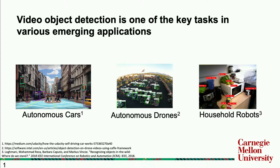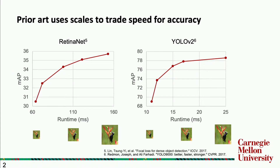Prior work introduced one knob for application developers to trade off between accuracy and speed, and that knob is the scale of the input image. Here we show two prior art in object detection trading off accuracy and speed when they downsample the image. As we can see clearly, there is a trade-off between accuracy and speed when we resize the input image.